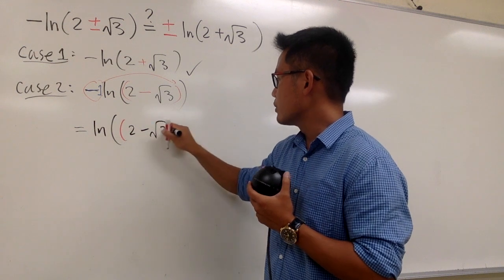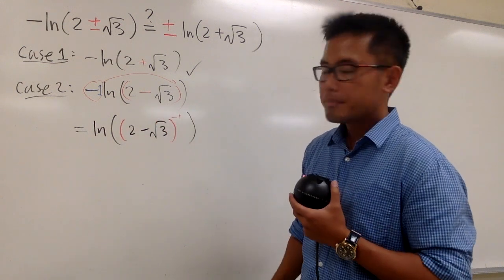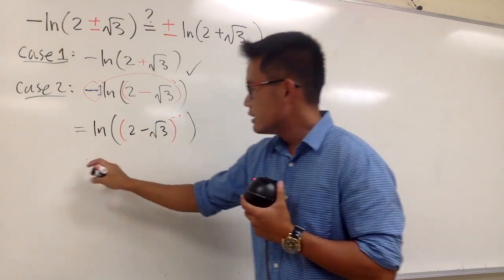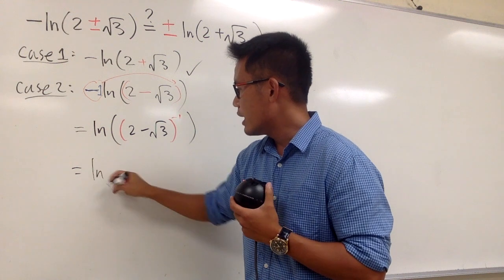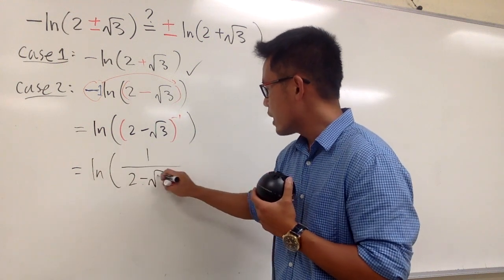2 minus square root of 3, and then raised to the negative 1 power. Negative 1 power means what? We can bring this down to the denominator, so we can write this down as ln of 1 over 2 minus square root of 3 instead.